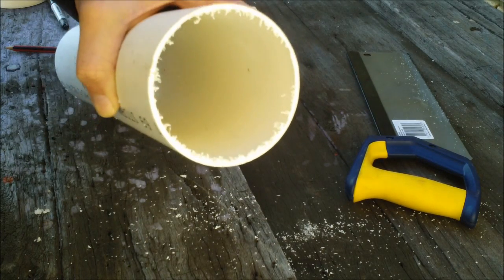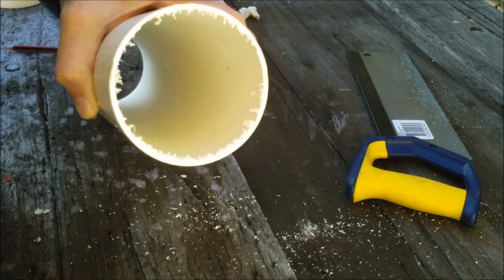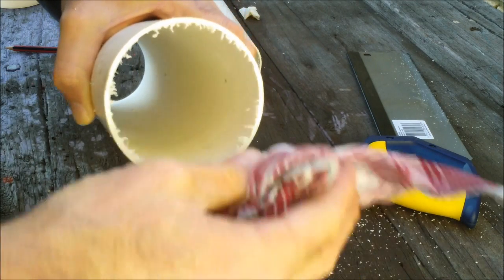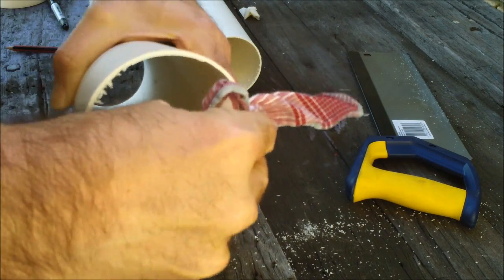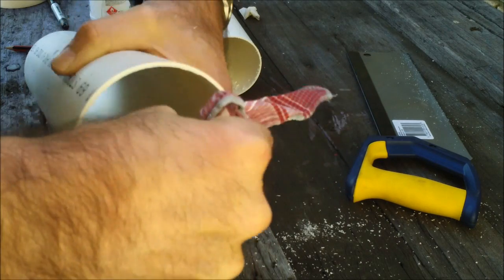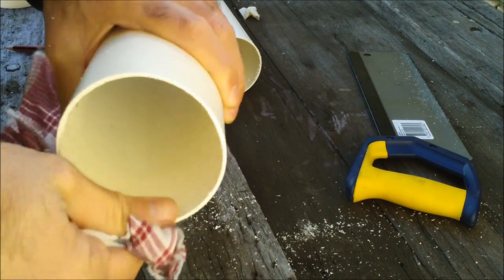Now if you look, you can see that on the end of the pipe, there's all these daggy bits of plastic. And they're just called swarf. We're just going to take them off with any piece of cloth. Just wrap it around there. Takes all the pieces off.